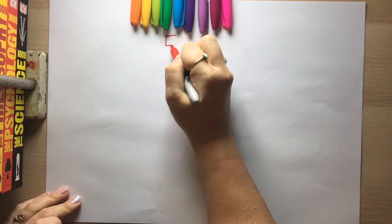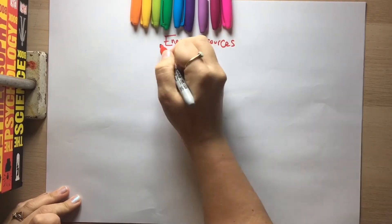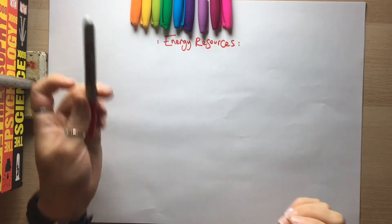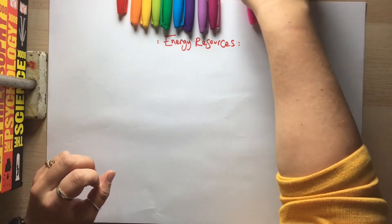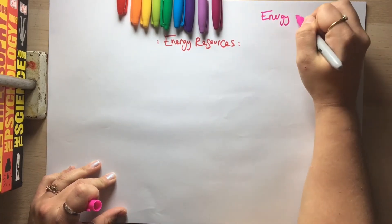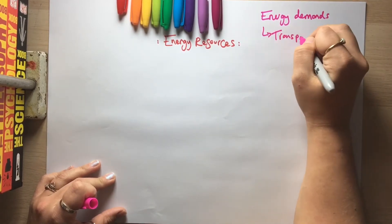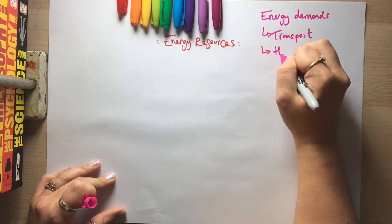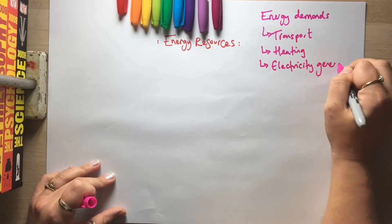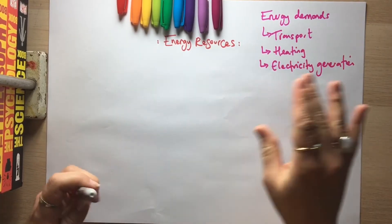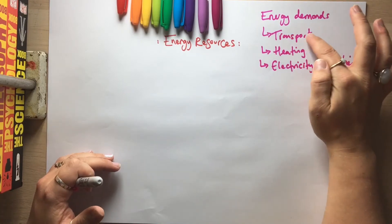We'll do some quick revision on energy resources — apologies if you can hear fireworks in the background, it's bonfire night. The topic starts with energy demands: what do we use energy for? We can break this down into three things: transport, heating, and electricity generation. Make sure you revise all three, not just electricity.